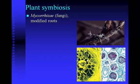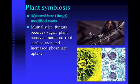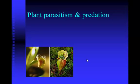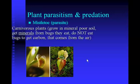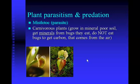The last thing I want to talk about is plant parasites and plant predators. Plant parasites like mistletoe suck energy out of another plant. Carnivorous plants — plant predators — grow in mineral-poor soil and capture bugs, like the Venus flytrap and the pitcher plant. Carnivorous plants do not eat bugs to get food or carbon — plants get their carbon from CO2 in the air. Carnivorous plants eat bugs to get minerals like nitrogen and phosphate. Venus flytraps usually live in really sandy, mineral-poor soil and only need to eat a bug about once a month.